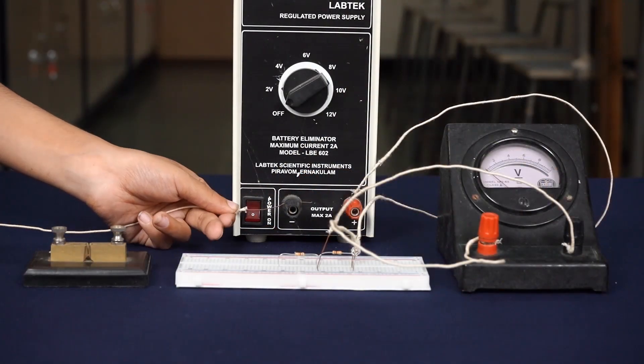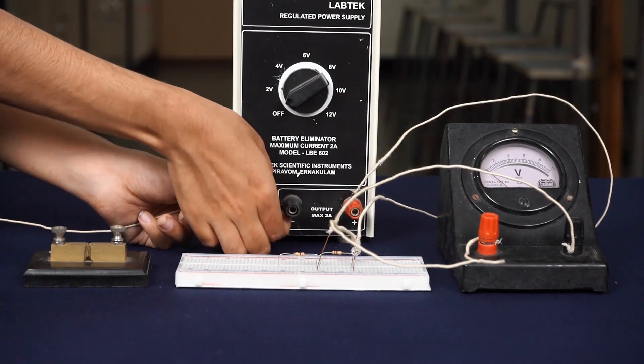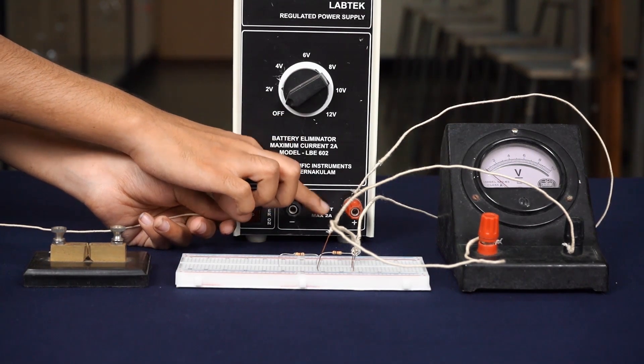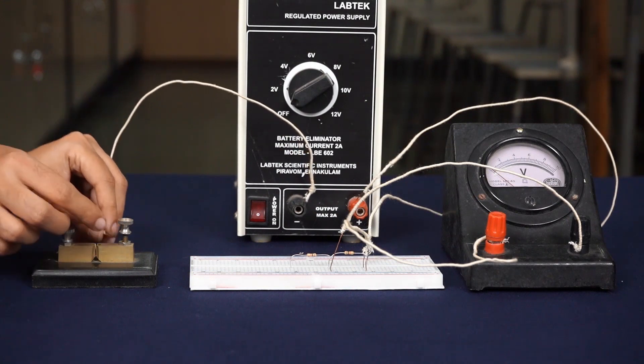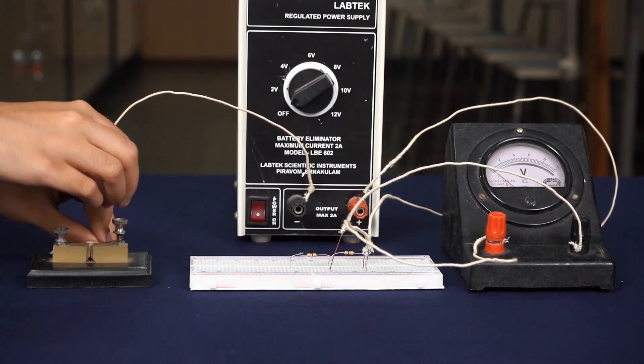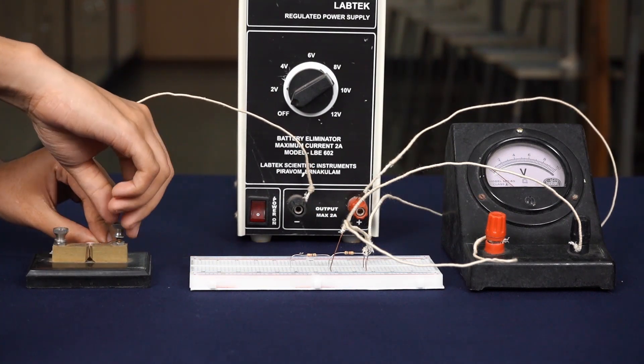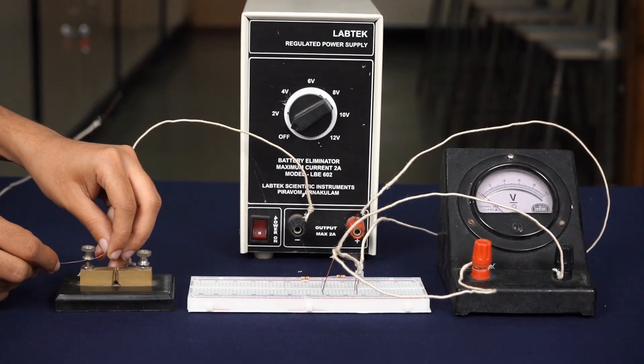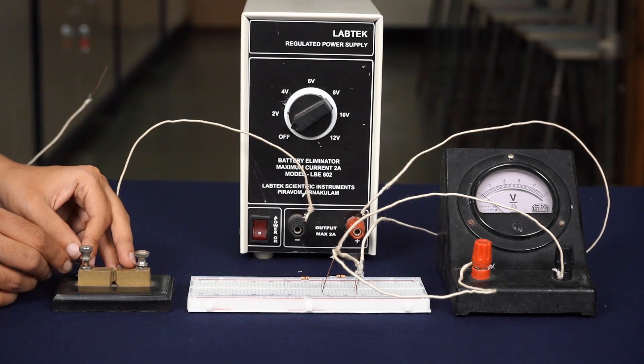Connect the negative terminal of the cell to the key. Connect the key to another part of the resistors.